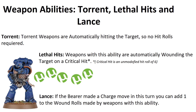Torrent: when a weapon has the Torrent ability, it automatically hits the target. Lethal Hits: with this weapon, when you score a critical hit, you automatically wound the target — you don't have to roll a wound roll. A critical hit is when you roll an unmodified hit roll of 6.